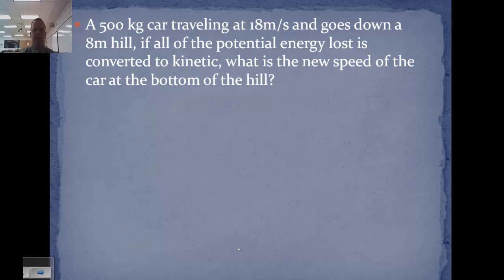A 500 kilogram car traveling at 18 meters per second goes down an 8 meter hill. If all the potential energy lost is converted to kinetic, what is the speed at the bottom of the hill? So at the top of the hill, we have a 500 kilogram car, an initial velocity of 18 meters per second, and a height of 8 meters. At the bottom, we still have a mass of 500. We're looking for the velocity, and we know the height is now zero.